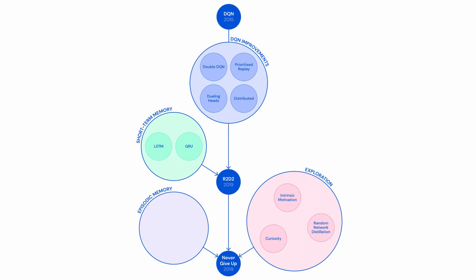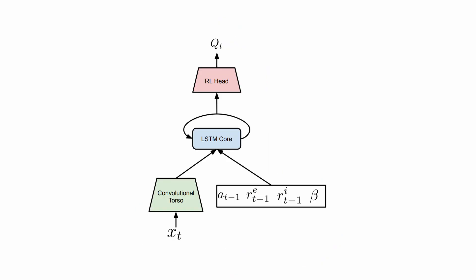Never Give Up also adds as input to the Recurrent Neural Network the beta value for the conditioned UVFA and the rewards of the previous step to deal with the variability of the intrinsic reward.